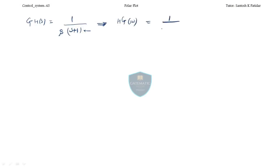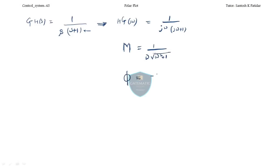Let's convert to j·Omega. The question becomes 1 over j·Omega·(j·Omega + 1). The magnitude M equals 1 over Omega·sqrt(Omega² + 1), and the phase φ equals minus 90 degrees minus tan-inverse(Omega).